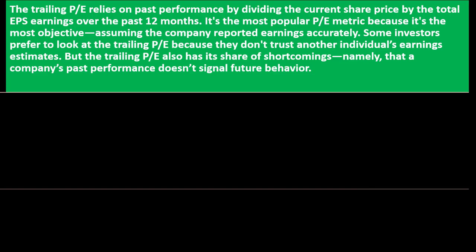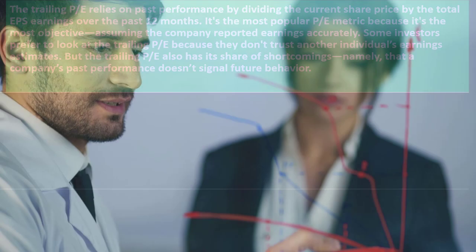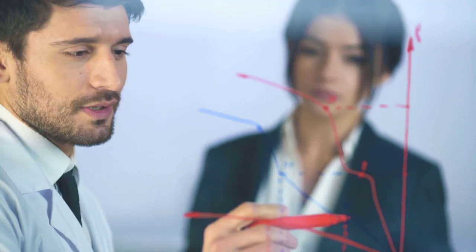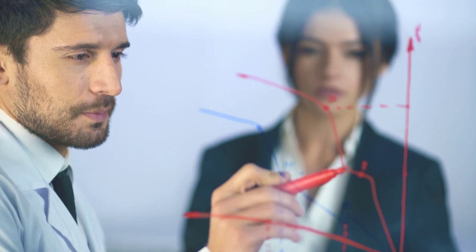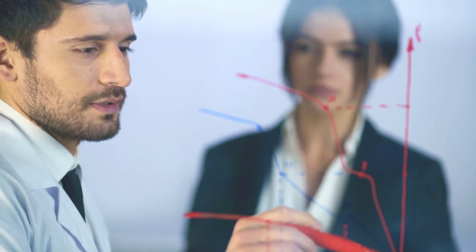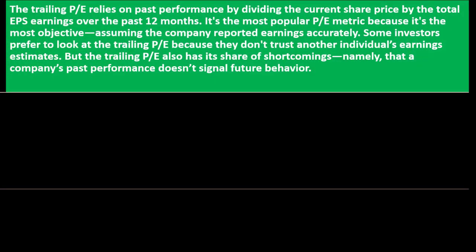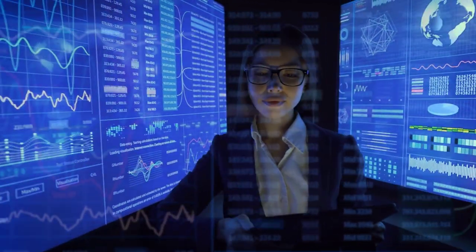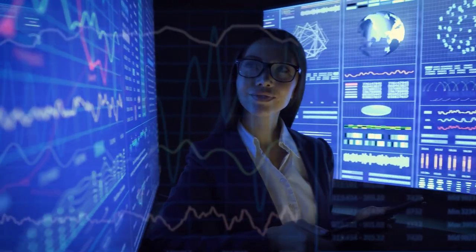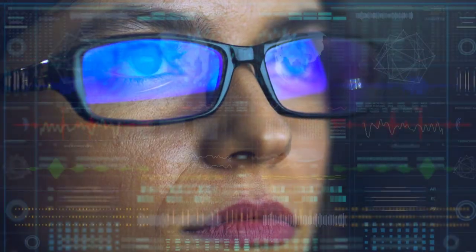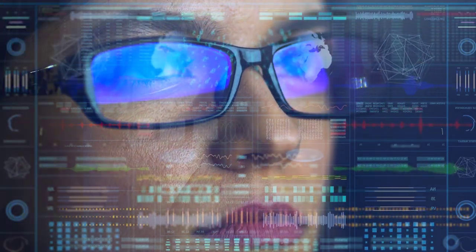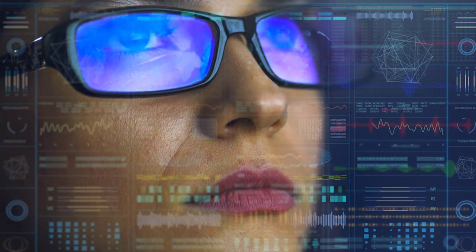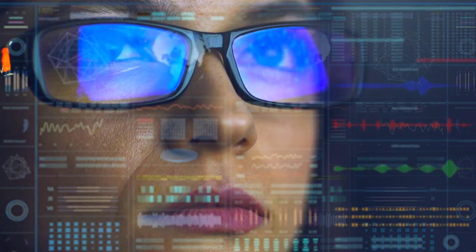Some investors prefer the trailing P/E because they don't trust another individual's earnings estimate — they'd rather look at what happened in the past. However, the trailing P/E has its shortcomings: a company's past performance doesn't necessarily signal future behavior. If things are changing rapidly, past data may not reflect what's coming, and there could be substantial changes whose effects nobody knows until the future becomes the present.